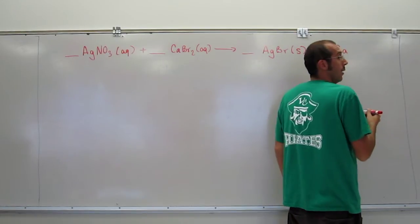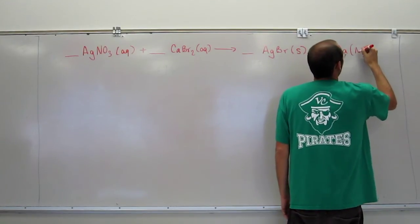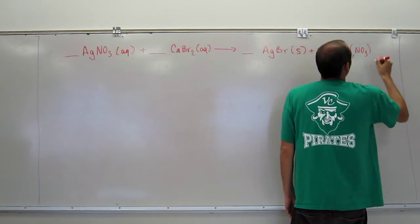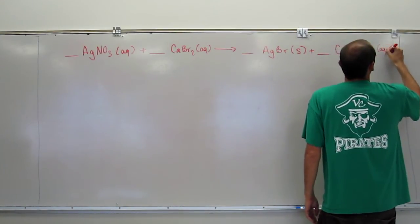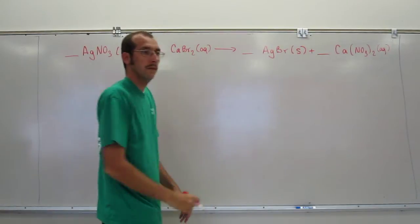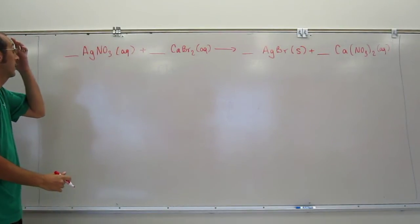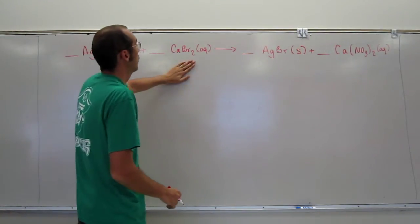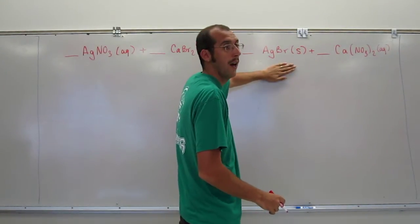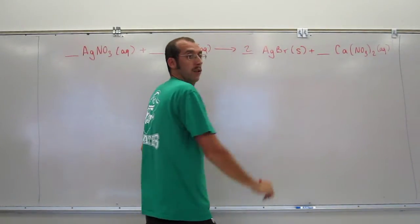Two of them, right? Because calcium is plus 2, right? Calcium is plus 2, and nitrate is what? Minus 1, right? Okay. Like that. So that's the molecular equation, unbalanced. And now all we've got to do is balance it. So, we've got two bromines here, not there. So, two, right?